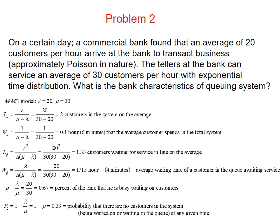Problem 2. On a certain day, a commercial bank found that an average of 20 customers per hour arrive at the bank to transact business, approximately Poisson in nature. The teller at the bank can serve an average of 30 customers per hour with exponential time distribution. MM1 model: lambda equals 20, mu equals 30. Ls, the average number of customers in the system, equals lambda over (mu minus lambda) equals 20 over (30 minus 20) equals 2 customers in the system on average.